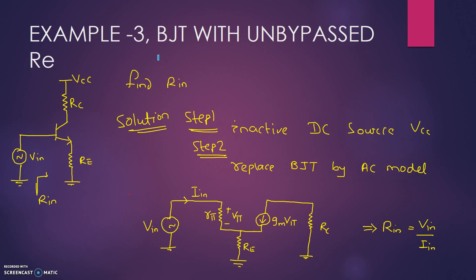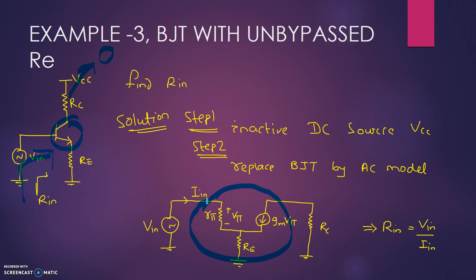In this next question, there is a BJT with an unbypassed RE — sometimes called a degenerating RE model — where the emitter resistance is not bypassed. It is a degenerating circuit and we have to find the input resistance R_IN from the input source. Solution step one: deactivate DC sources — VCC is set to zero. Step two: replace the BJT by its AC model.